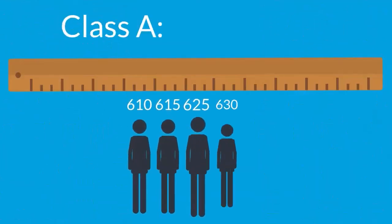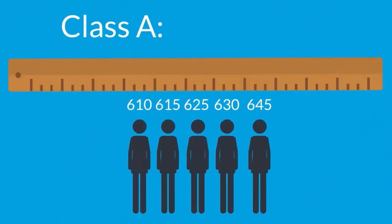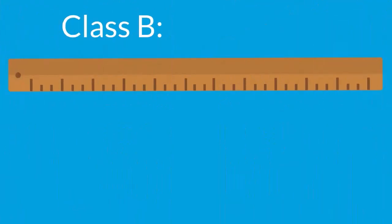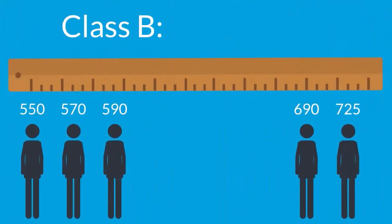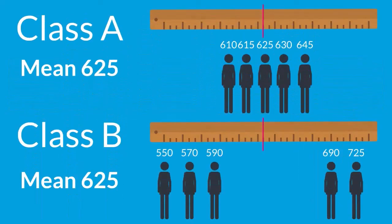In Class A, students have scale scores from 610 to 645. The mean score is 625. Now let's look at Class B. Students in Class B have scores as low as 550 to as high as 725, very different scores from Class A. However, Class B has the same mean score as Class A. Even so, the spread of the scores are very different.